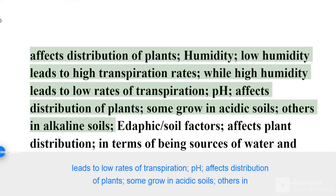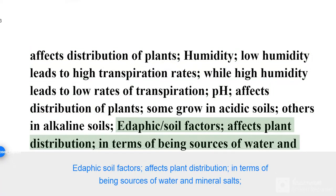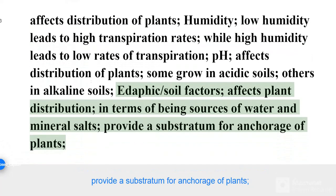Humidity: low humidity leads to high transpiration rates while high humidity leads to low rates of transpiration. pH affects the distribution of plants — some grow in acidic soils, others in alkaline soils. Soil factors affect plant distribution in terms of being sources of water and mineral salts, and provide a substratum for anchorage of plants.